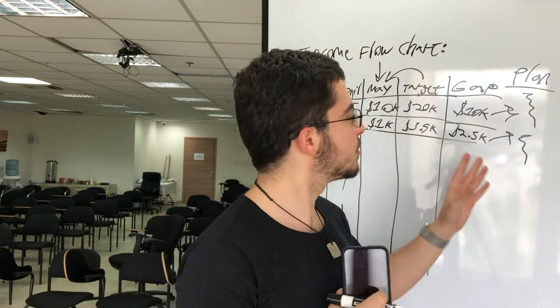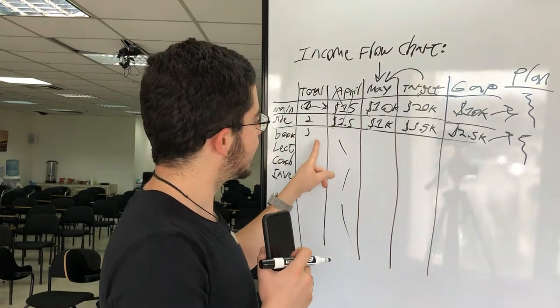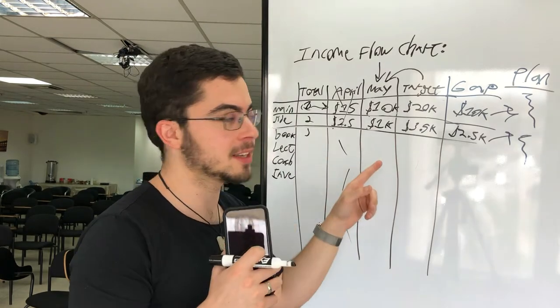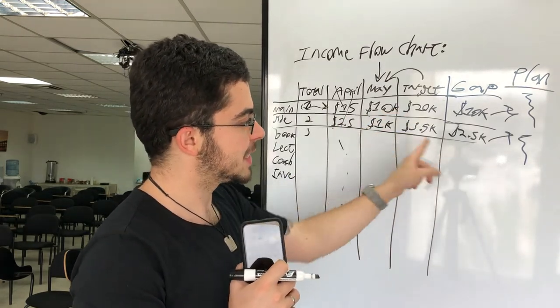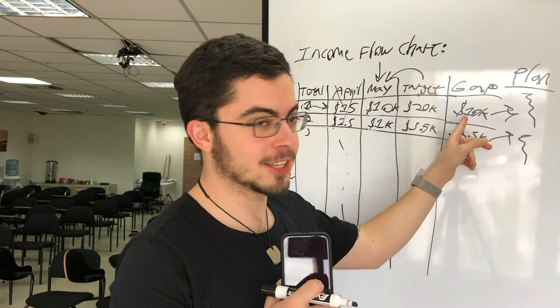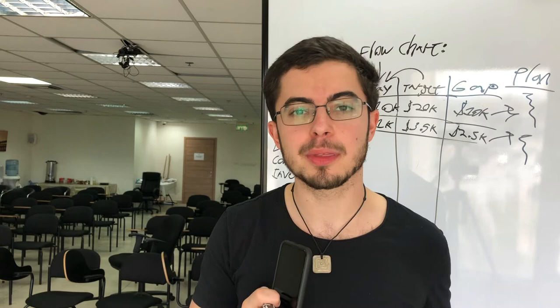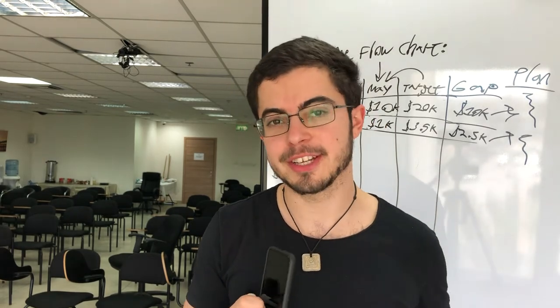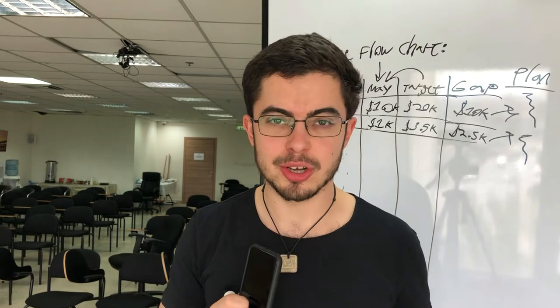So that's pretty much it. Every single income source gets written down — how much total from all months, then last month, then this month, then the target for this month, and the gap from where I am right now. Update it every single week and set a plan to close the gap. This is the income flowchart, and it's the tool I've been using for the past half year to greatly increase my income — adding at least 30% every single month. Whatever you put your attention on grows. If you don't pay attention to your income sources, they'll just disappear.